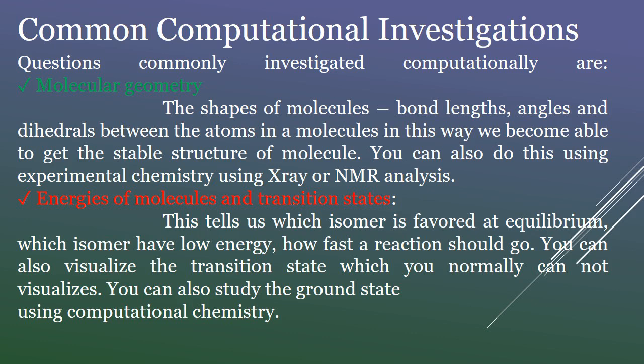Energies of molecules and transition states tell us which isomer is favored at equilibrium, which isomer has low energy, and how fast a reaction should go. You can also visualize the transition state, which you normally cannot visualize, and study the ground state using computational chemistry.